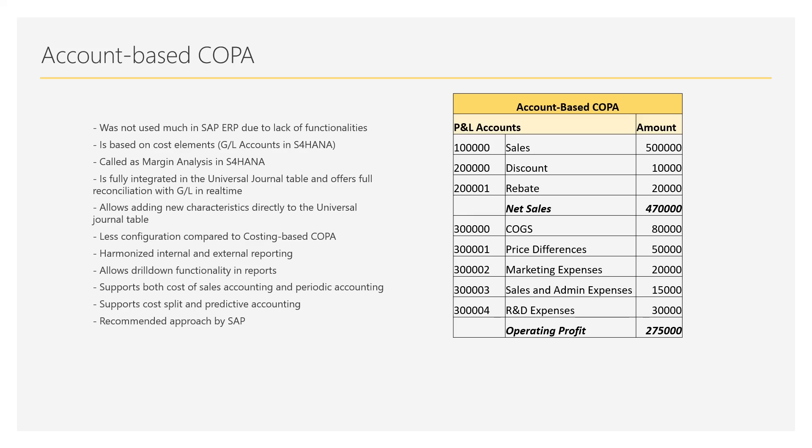A lot has changed in account-based COPA in S4 HANA. It is now based on GL accounts. In ERP it was based on cost elements, but in S4 HANA cost elements have been merged with GL accounts. A GL account and a cost element are now created in the same way in transaction code FS00, where you can create a primary cost element, secondary cost element, non-operating account, or balance sheet account.